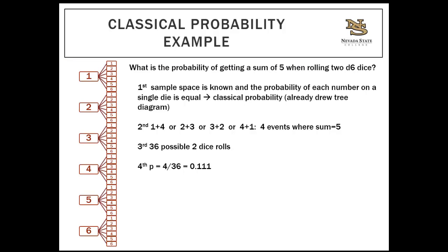For example: what is the probability of getting a sum of five when rolling two dice? This is classical probability because there's an equal chance of every roll happening. Using a tree diagram, the first roll can be one, two, three, four, five, or six, and for each first roll, the second roll can also be one through six. We then identify all combinations that sum to five: one and four, two and three, three and two, four and one.